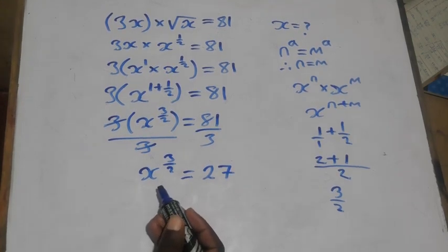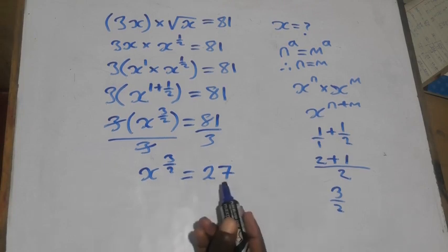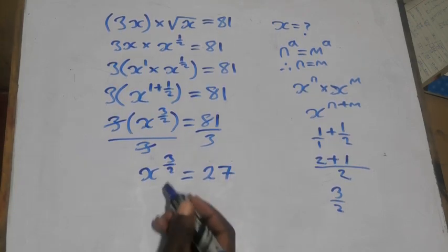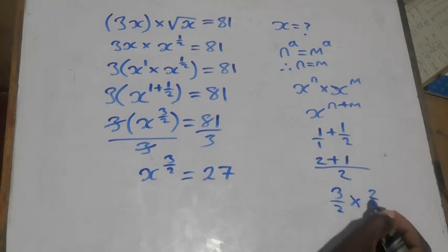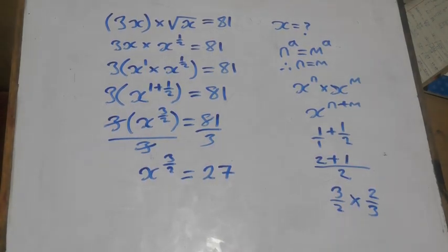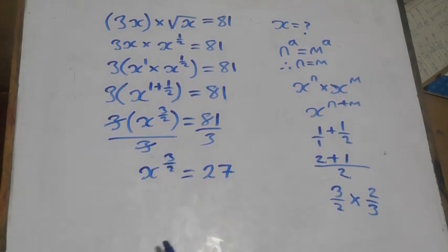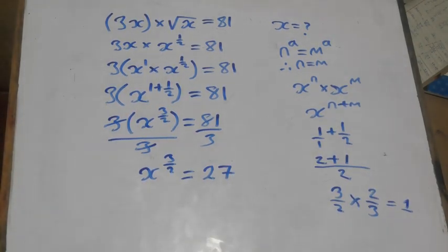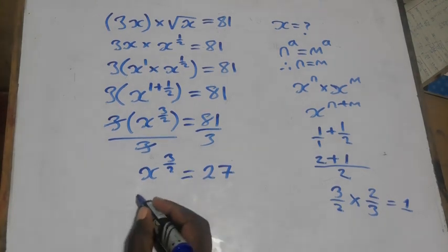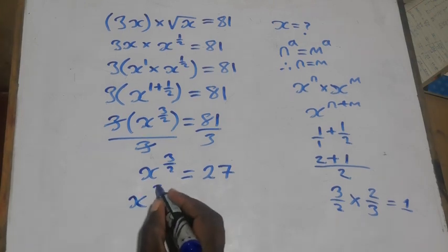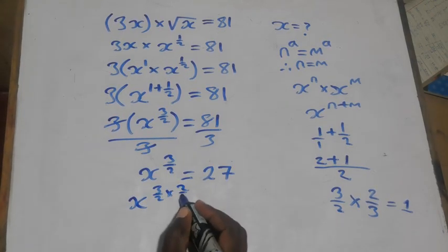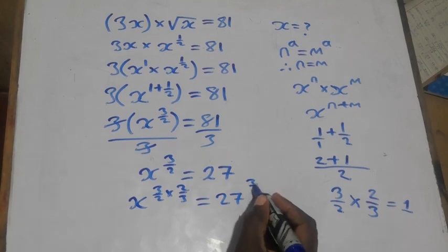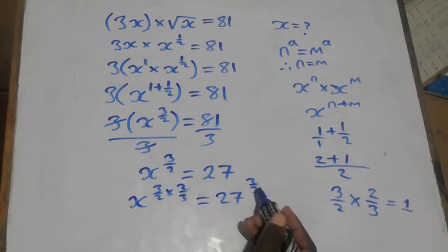Now we multiply the reciprocal of 3 over 2 to both sides of the equation. The reciprocal of 3 over 2 is 2 over 3 — it is the number we multiply by 3 over 2 to get a product of 1. So we apply 2 over 3 to both sides: x to the power 3 over 2 times 2 over 3 equals 27 to the power 2 over 3.